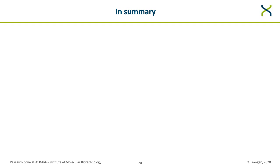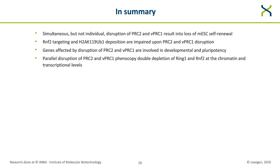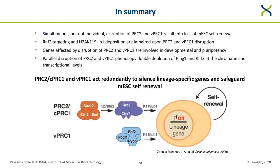In summary, simultaneous but not individual disruption of PRC2 and variant PRC1 leads to loss of self-renewal in mouse embryonic stem cells. Double disruptions impair RNF2 targeting and H2A ubiquitin deposition. Genes directly affected are involved in developmental and pluripotency pathways, and parallel disruption from both directions phenocopies complete inactivation of PRC1 at chromatin and transcriptional levels. We conclude that PRC2, canonical PRC1, and variant PRC1 constitute independent pathways that act redundantly to silence lineage-specific genes and safeguard ESC self-renewal capacity. Now I will hand over to John for a demo of Rosalyn.